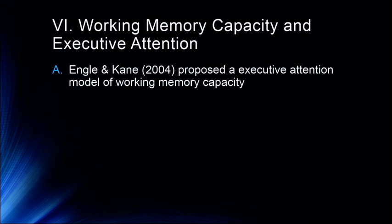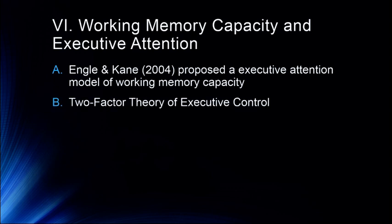They proposed two factors that are part of executive control. The first is the maintenance of task goals in active memory — basically, your ability to remember what you're supposed to keep doing. In one experiment, participants are supposed to keep their eyes from going to a blinking light, so they have to remember that's what they're supposed to do. People with higher levels of working memory are better able to do that because they're better able to maintain that task goal in active memory.